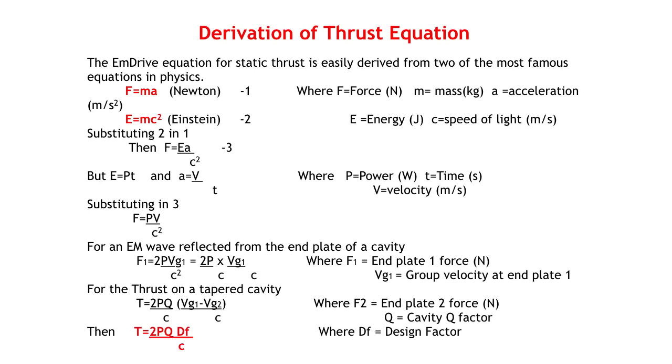For the total thrust on the tapered cavity: T = (2pQ/c)×(vg1 - vg2)/c. Remember we've already defined T as f1 - f2, and Q as a measure of the number of reflections that take place within the resonant cavity.